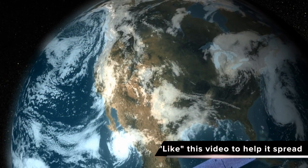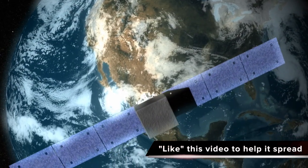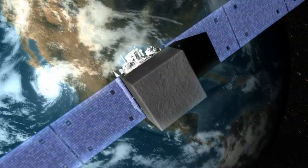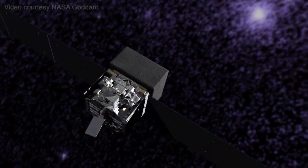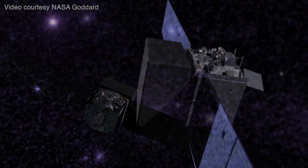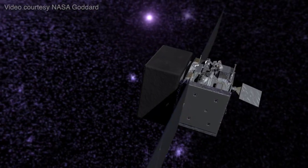The Fermi Gamma-ray Space Telescope is a powerful space observatory that opens a wide window on the universe. Gamma rays are the highest energy form of light, and the gamma-ray sky is spectacularly different from the one we perceive with our own eyes.